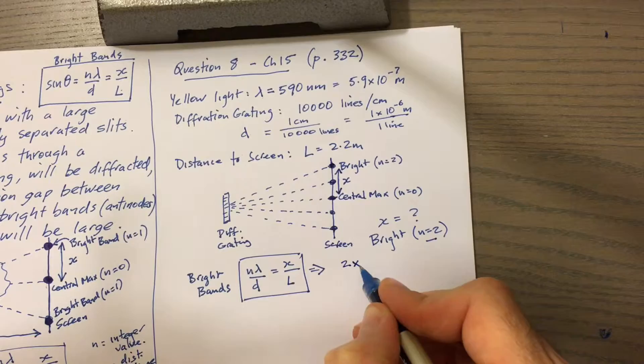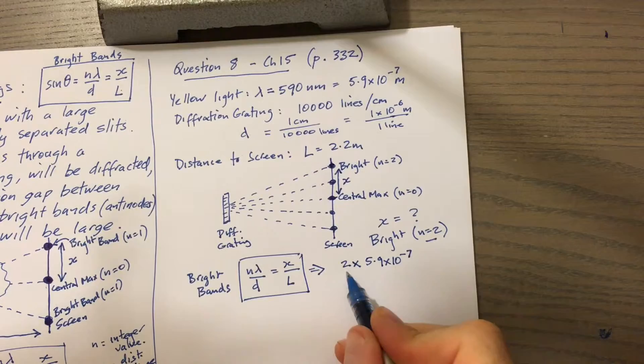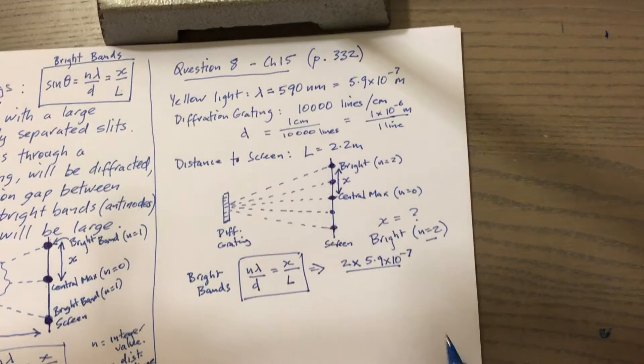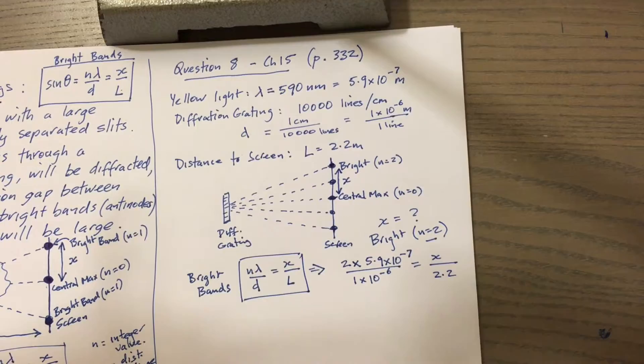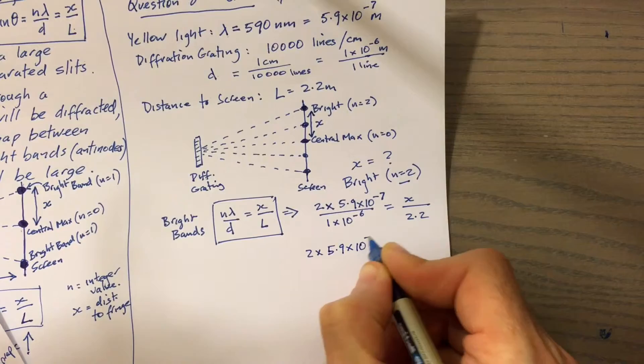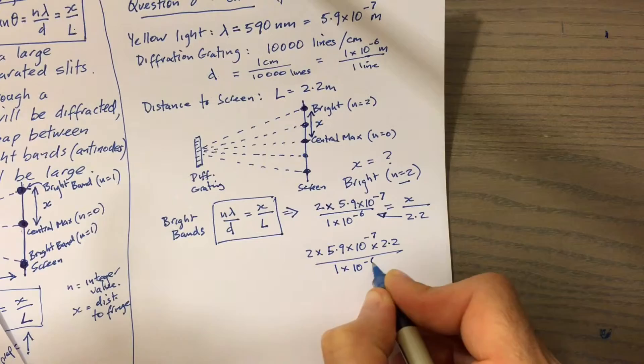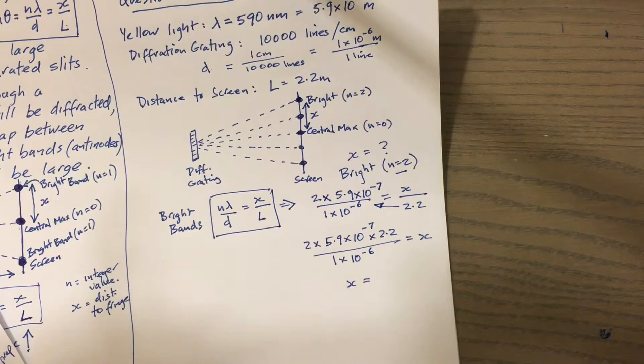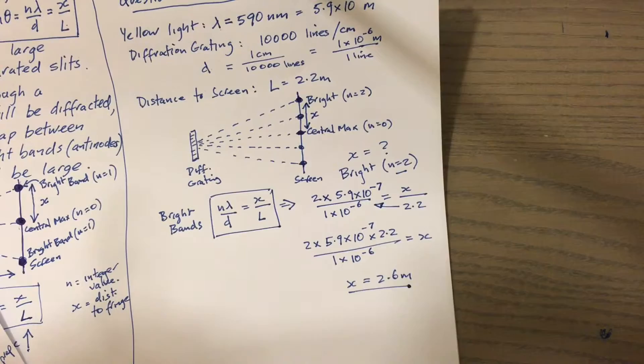So let's apply this formula. We've got n equal to 2. We've got a wavelength of 5.9 by 10 to the negative 7, that's in meters, make sure everything's in meters. We've got a distance of separation between the slits for the diffraction gradient at 1 by 10 to the negative 6. x is the thing we're trying to find, and L equals 2.2. Let's do a bit of cross multiplying. So 2 by 5.9 by 10 to the negative 7 times by 2.2, divided by 1 by 10 to the negative 6. That will give us our x, and quick computation on the calculator we should get 2.6 meters.